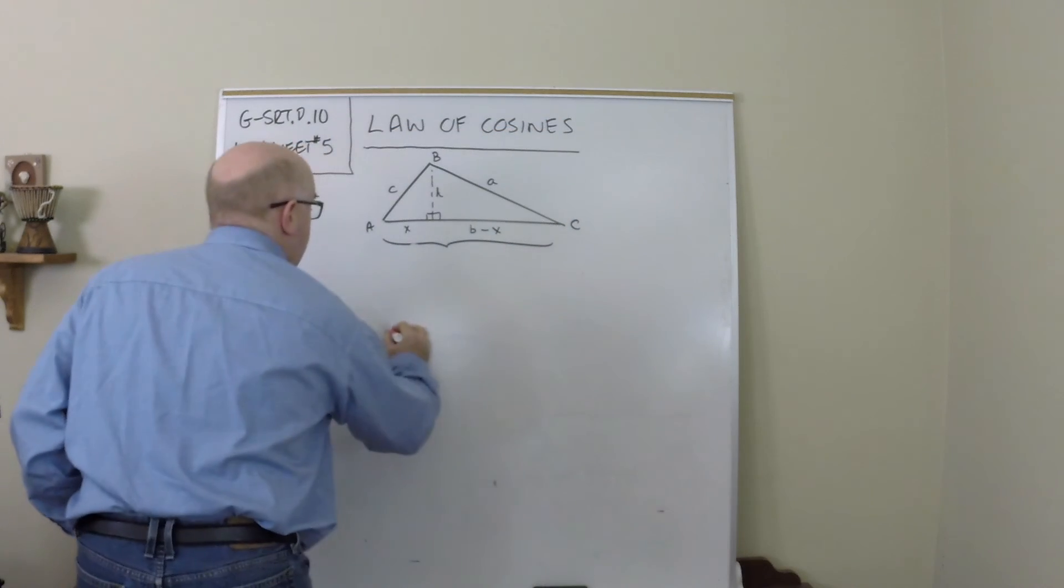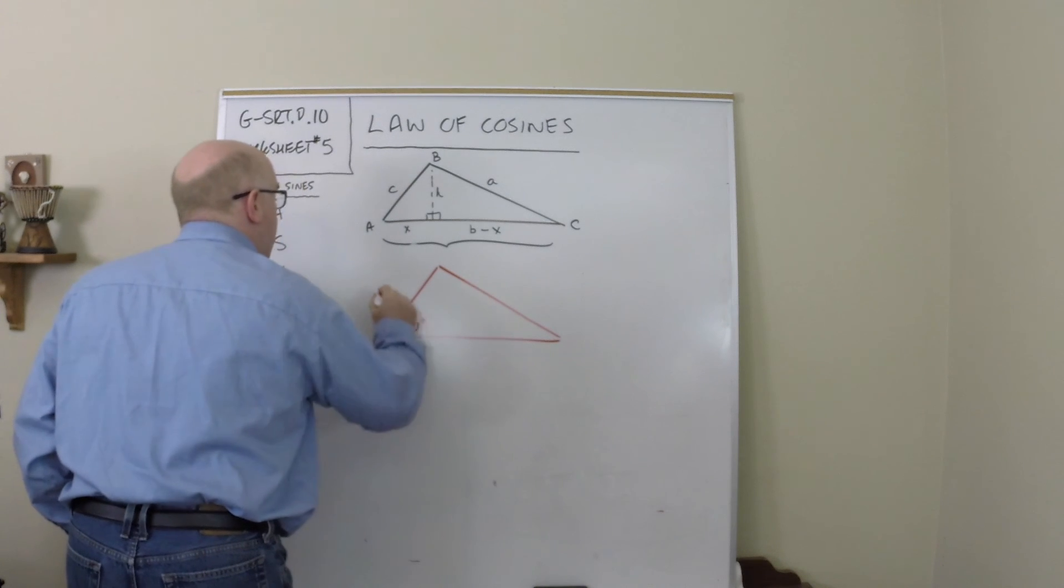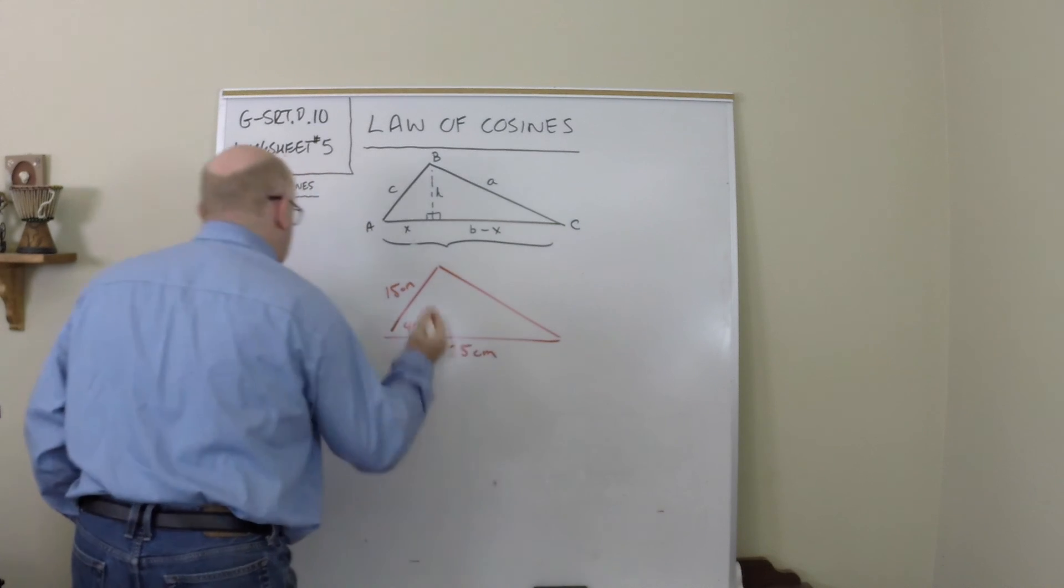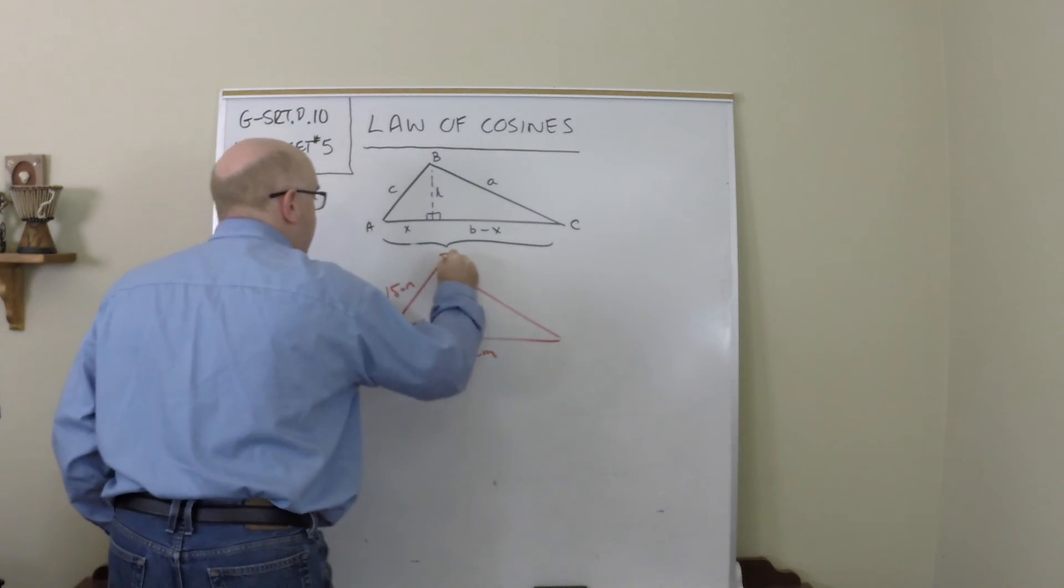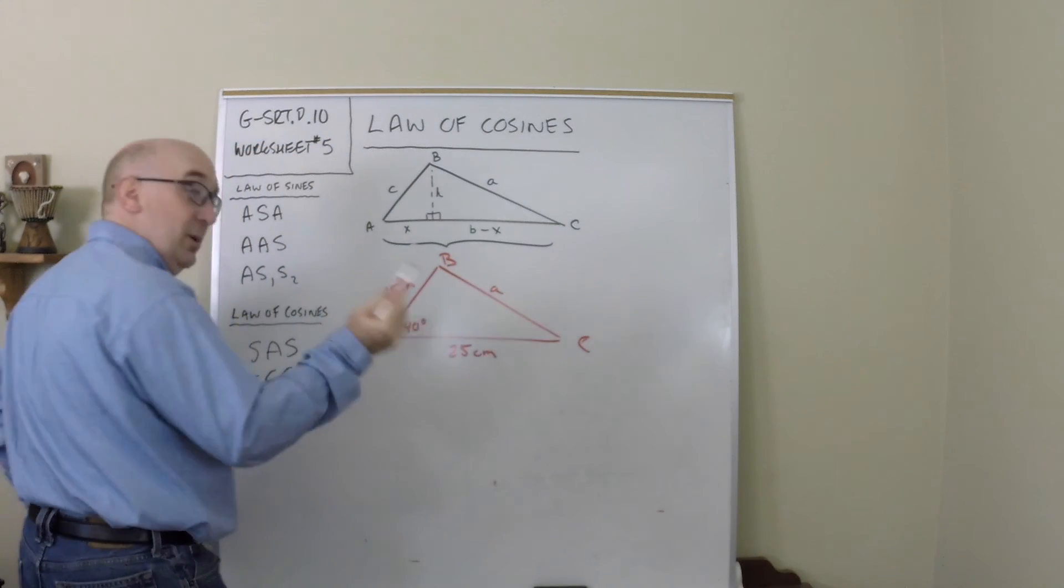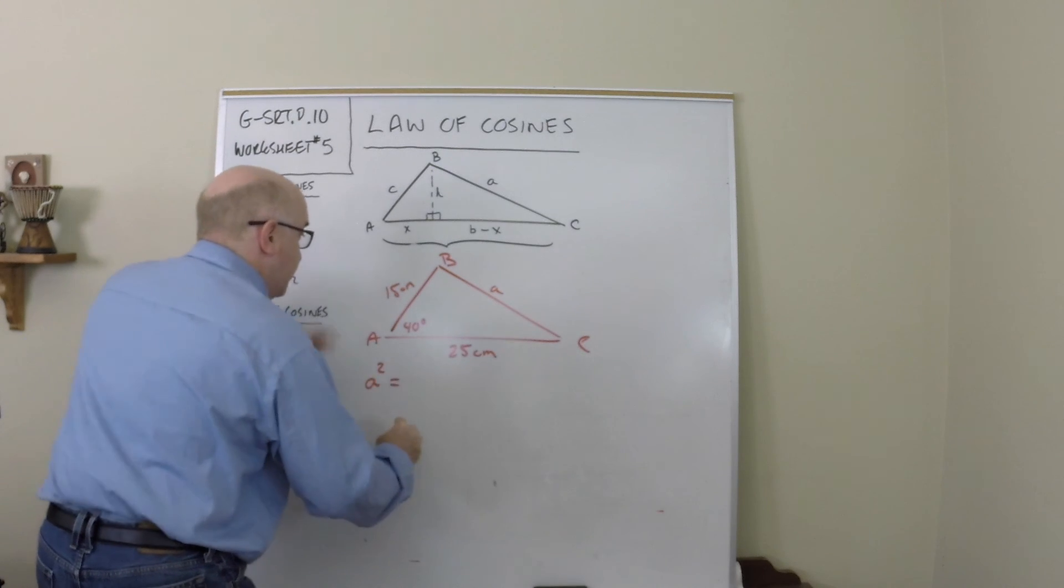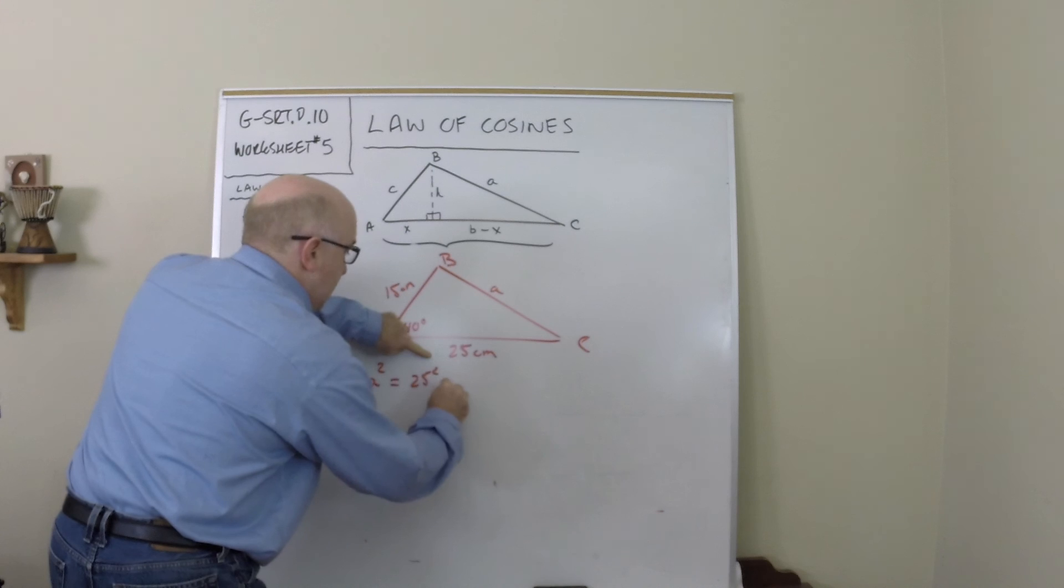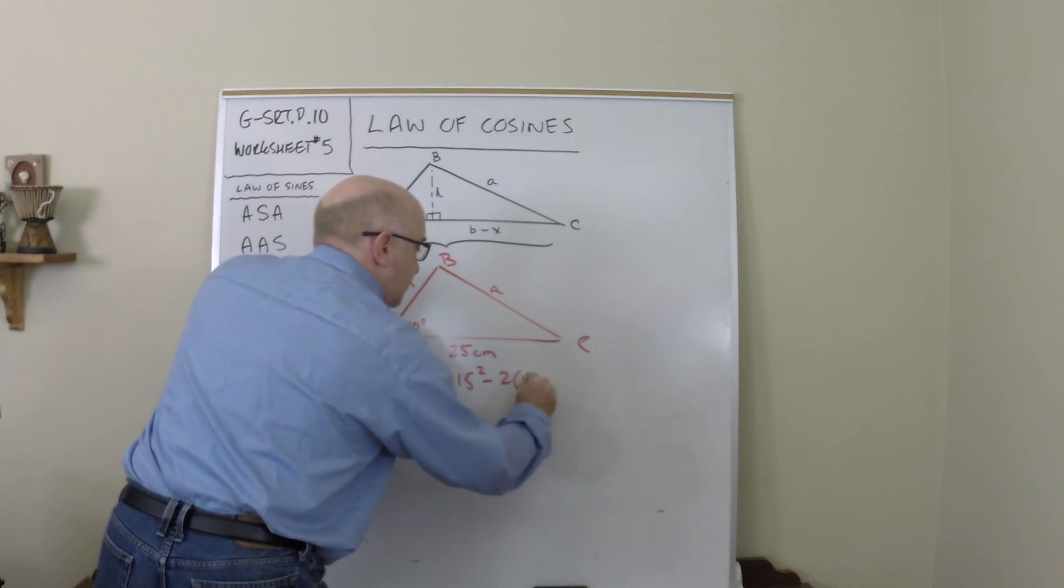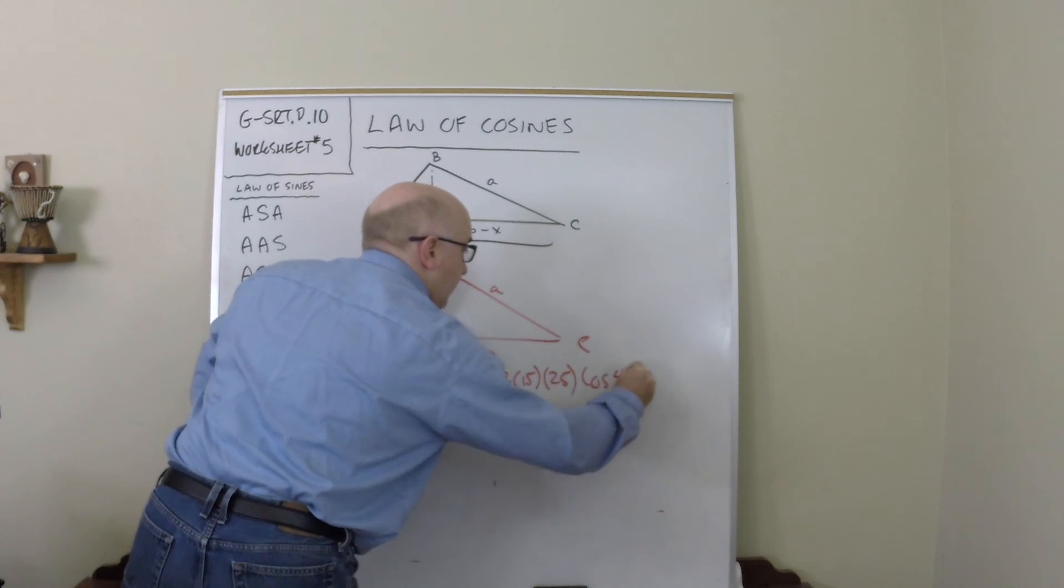If I had a problem that looked like this, if this was a 40 degree angle, this was 15, and this was 25, we would be solving for little a. So it would go as follows: a squared equals b squared plus c squared minus 2 times b times c times the cosine of 40.